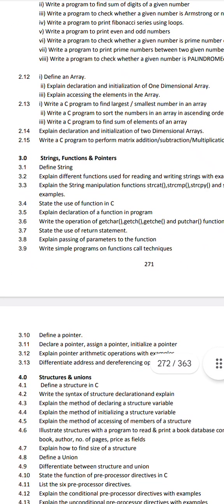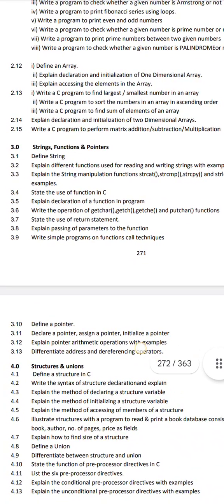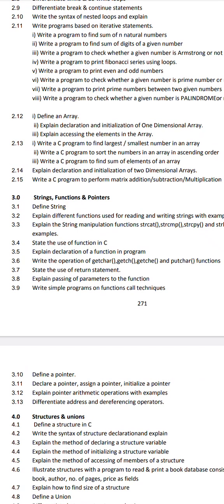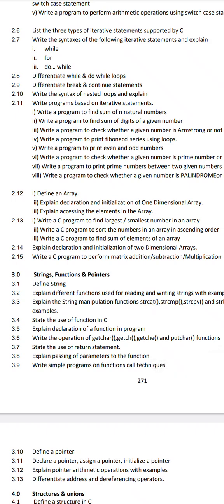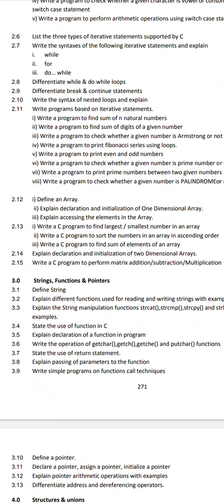This is the first important essay question. Next is 2.15: write a C program to perform matrix addition, subtraction, and multiplication. I will explain it properly. At least cover addition and subtraction — it looks like multiplication too. This is the programming part — 2D array important programs. The 1D array: you can find the largest and smallest number in an array. These two programs are very important: smallest and largest, addition and subtraction. The programs are one-dimensional array — declaration and initialization.